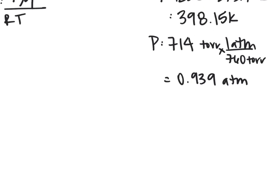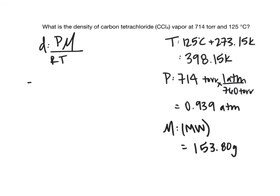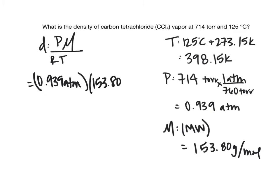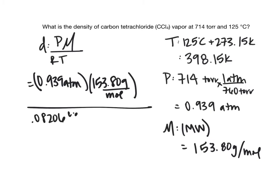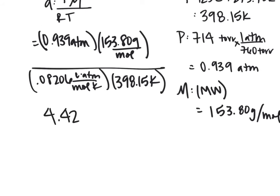The molar mass — the sum of all atomic weights for carbon tetrachloride — is 153.80 grams per mole. Plugging in: 0.939 atmospheres times 153.80 grams per mole, divided by 0.08206 liters atmospheres per mole Kelvin, times 398.15 Kelvin. We get 4.42 grams per liter.